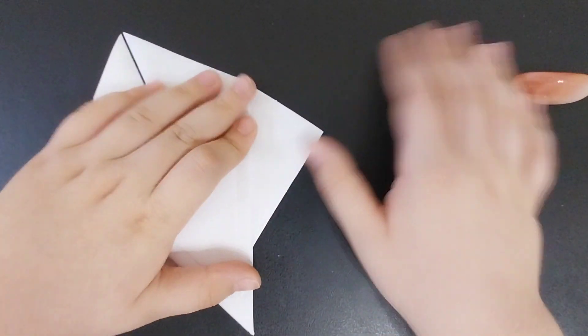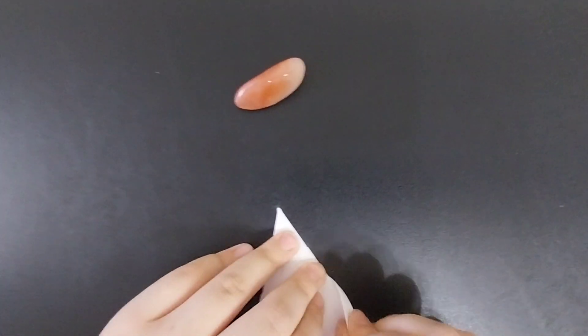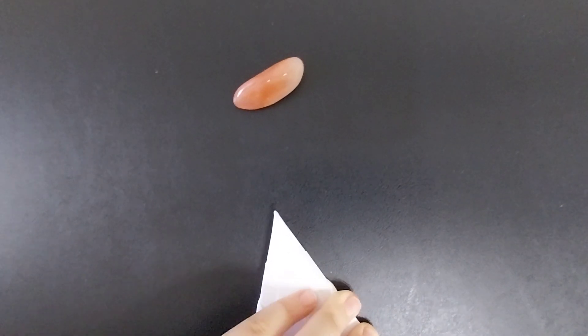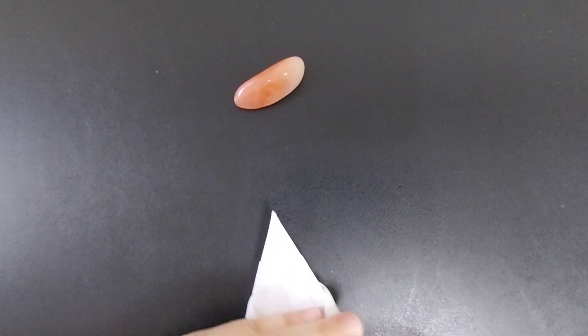Next, you can turn the model over and fold the wings over. They may bubble up, if they do just flatten them.